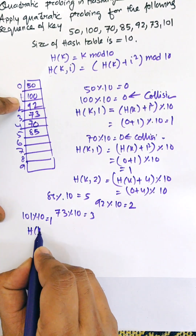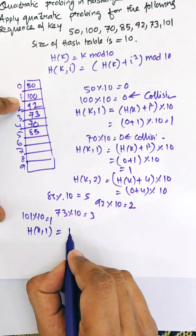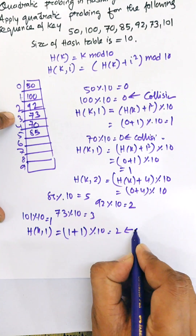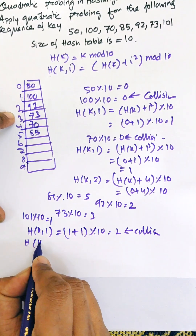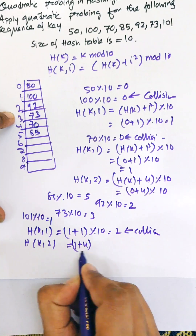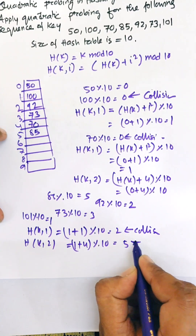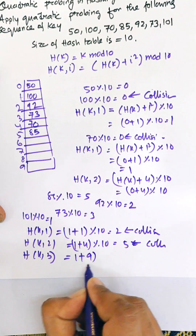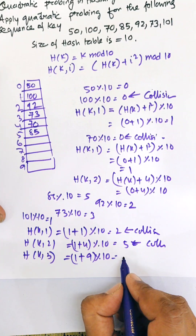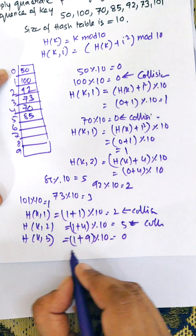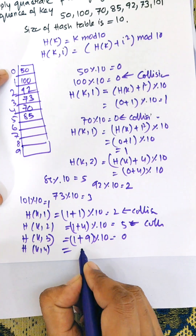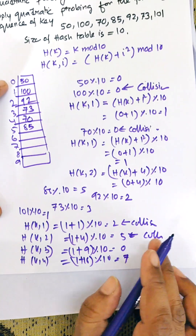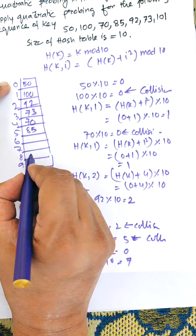For 101 mod 10 = 1, location 1 is already occupied. Check i=1: 1 + 1² mod 10 = 2, but location 2 is occupied. Check i=2: 1 + 4 mod 10 = 5, but location 5 is occupied. Check i=3: 1 + 9 mod 10 = 10 mod 10 = 0, location 0 is occupied. Check i=4: 1 + 16 mod 10 = 7. Location 7 is free, so 101 is allocated at location 7.